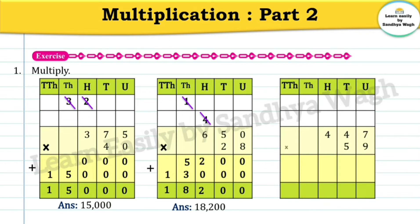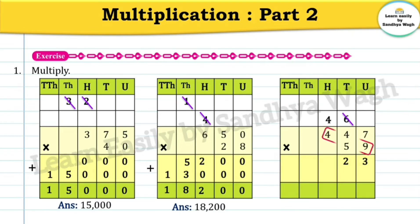Let's see the next example: 447 multiplied by 59. Nine sevens are 63, so we'll write 3 in the units place and 6 will go as a carry over. Nine fours are 36, thirty-six plus six is 42, so we'll write 2 in the tens place and 4 will go as a carry over. Nine fours are 36, thirty-six plus four is 40, write 0 and carry four.